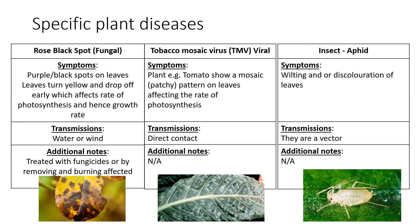There are specific plant diseases you could be asked about. Rose black spot and tobacco mosaic virus are covered in another presentation about different pathogens. We also have aphids, which are small insects that live on the outside of plants and are notorious for being a vector for disease — they carry diseases between plants. You need to know what causes each disease (either a fungus or a virus), the symptoms, how they're transmitted, and any additional notes. For aphids, you need to know they can cause wilting and discolouration of leaves, and that they're a vector for other diseases.